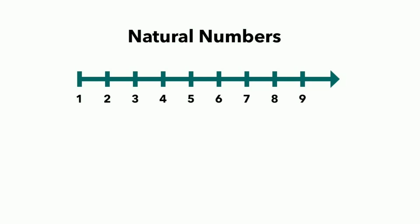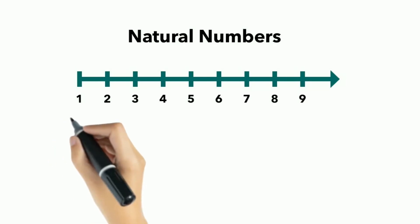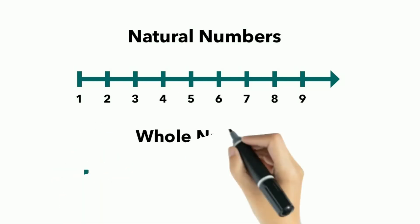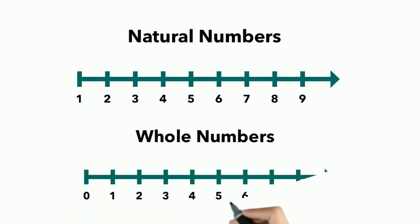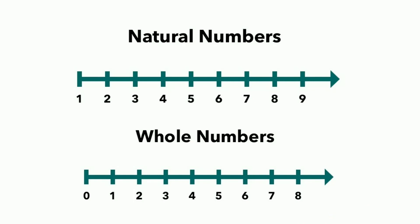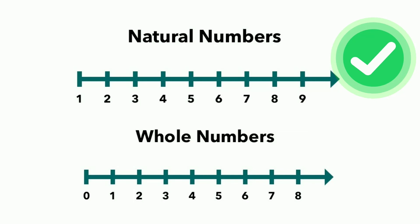And for the whole numbers, the number line looks like this because it starts with 0. The first number is 0 and then we keep on writing 1, 2, 3, 4, and so on. So this is the number line for natural numbers and this is the number line for whole numbers. This is how we represent numbers on a number line.